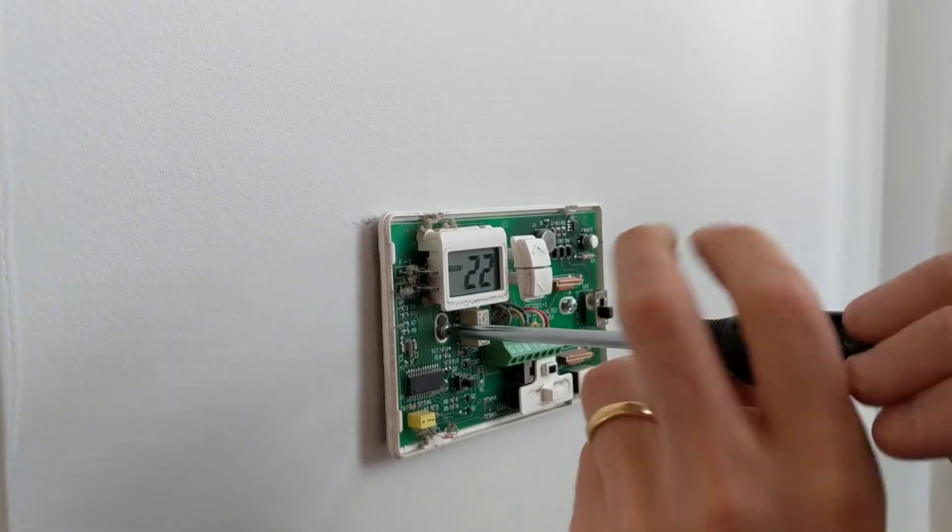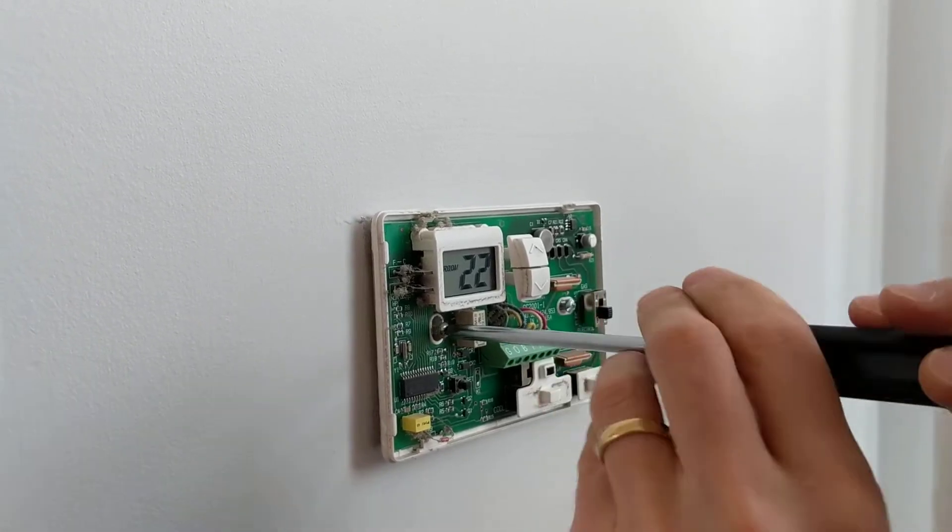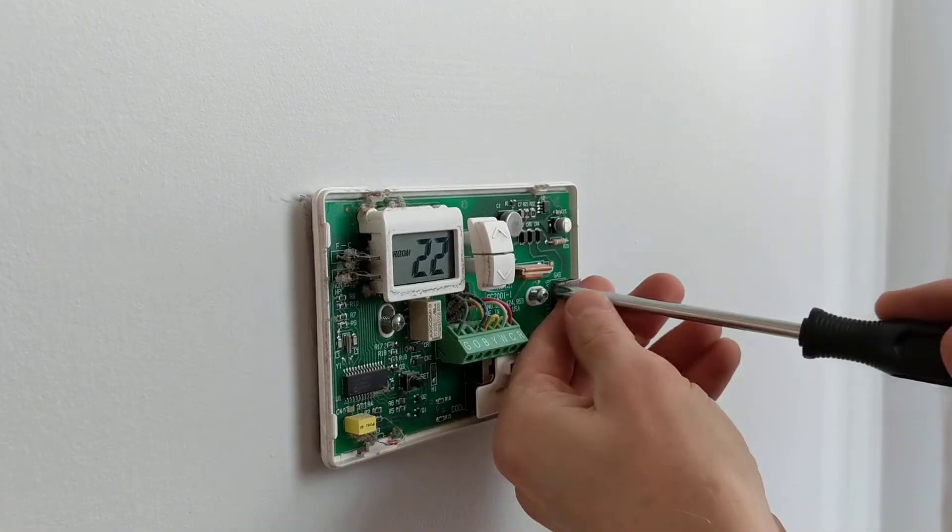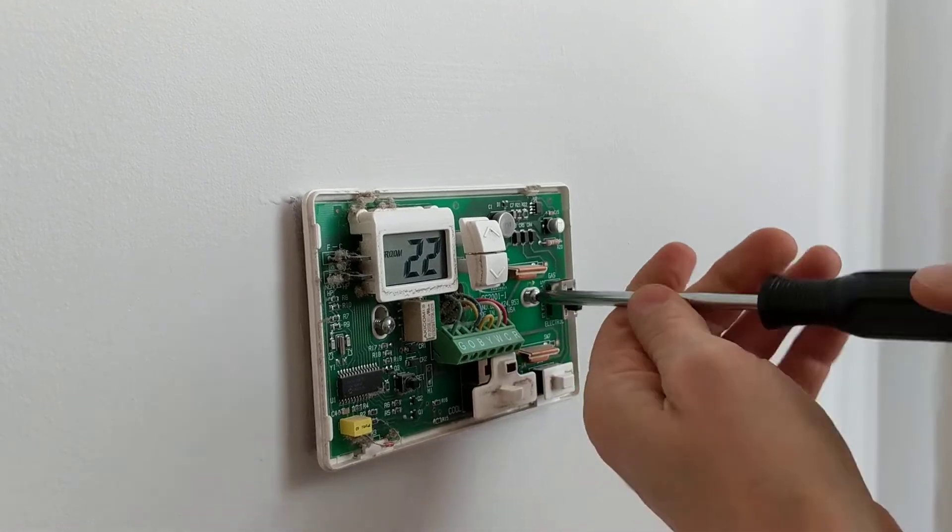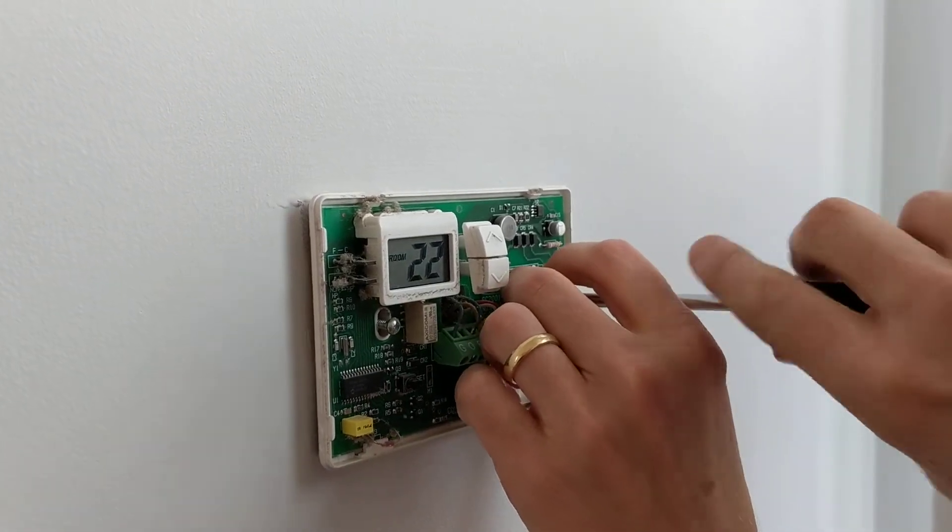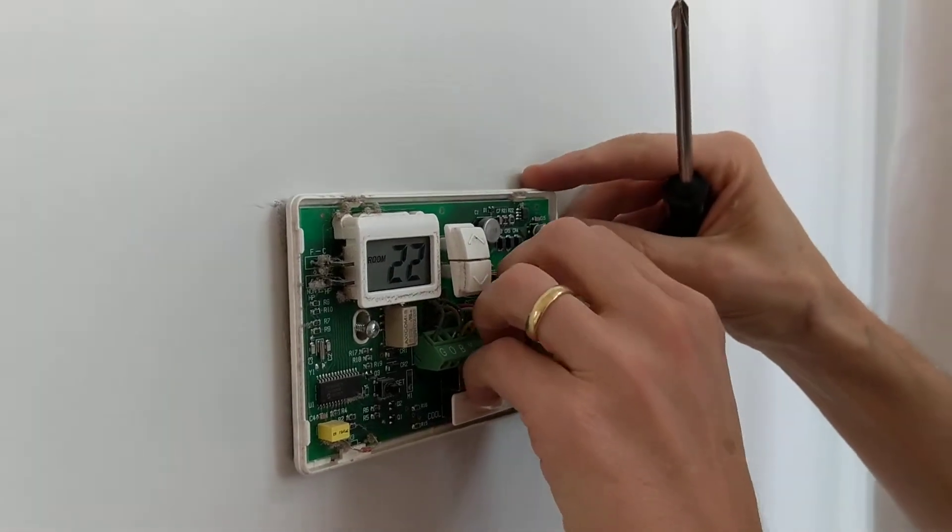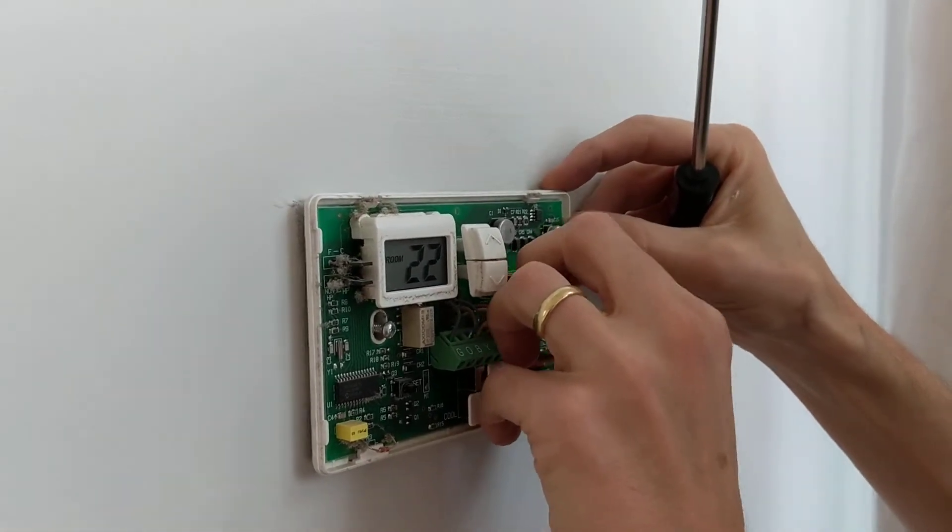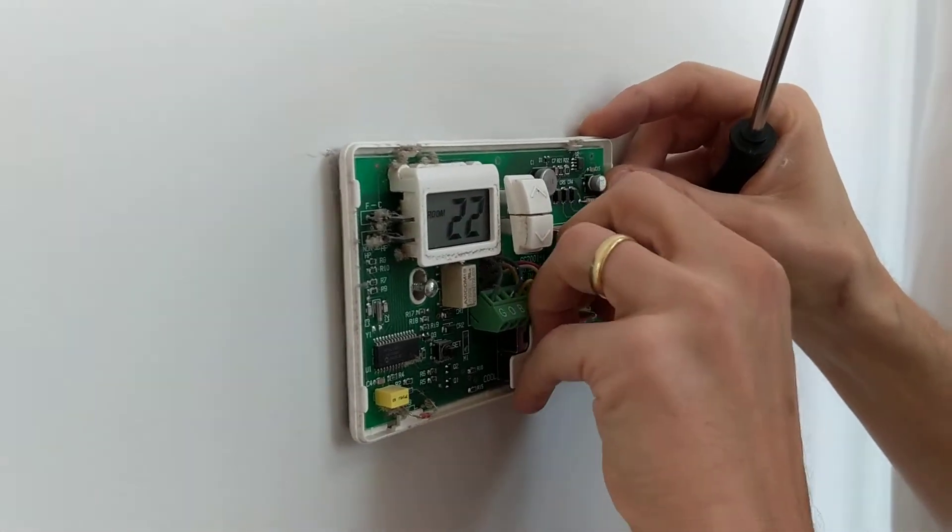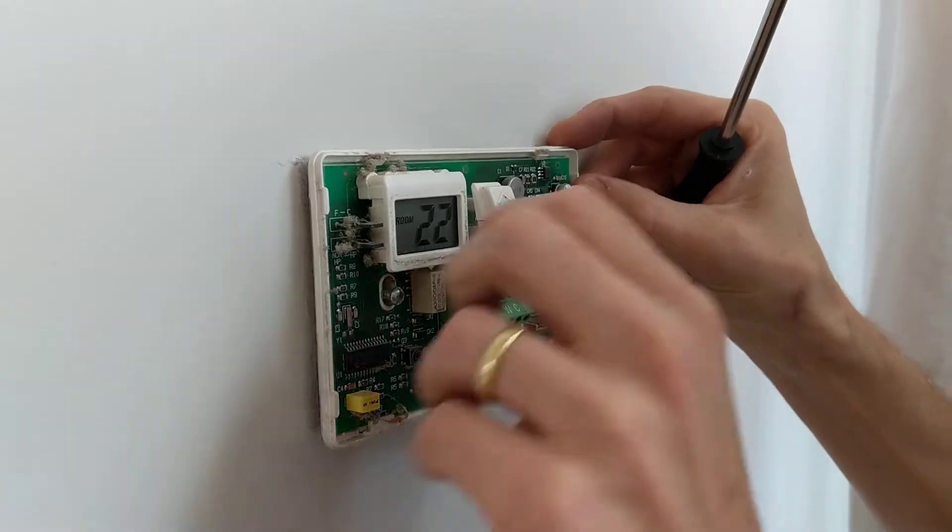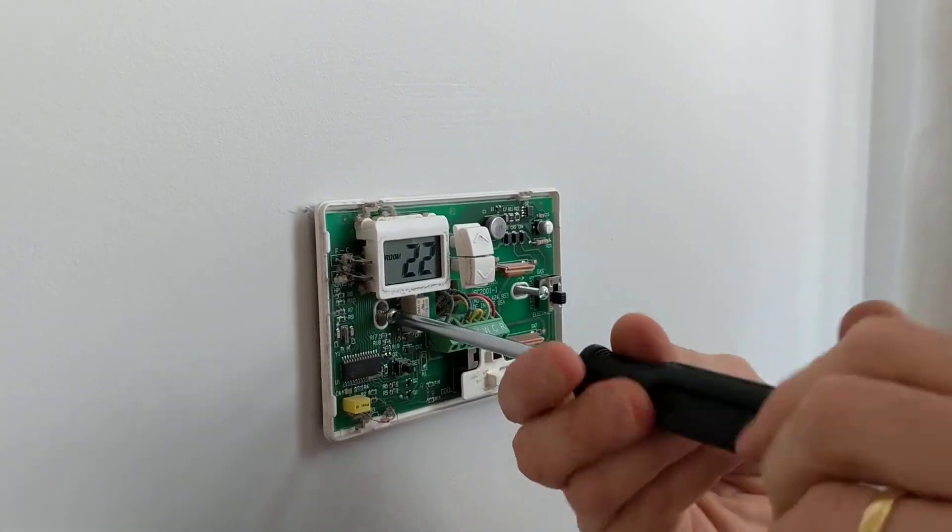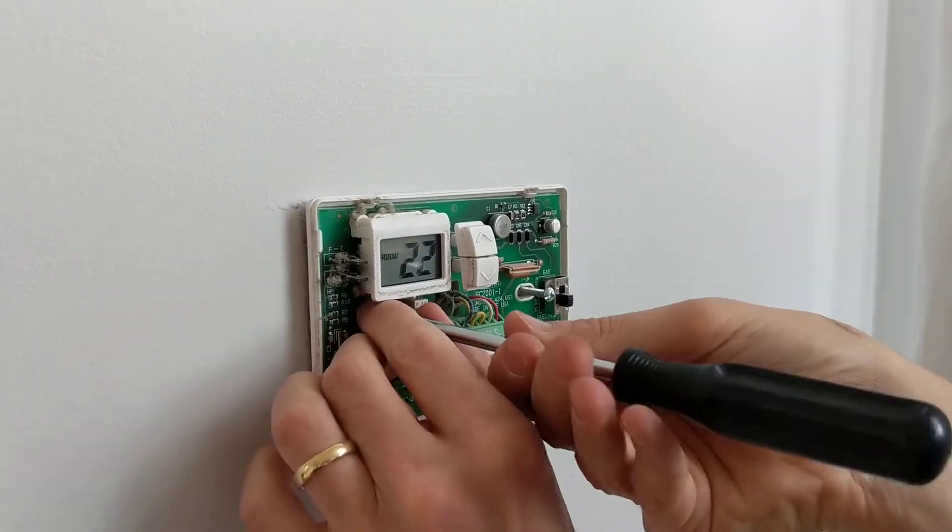So what a programmable thermostat does is essentially automatically pushes the buttons up and down for you on a schedule. There are four settings per day and seven days. So essentially you've got a morning setting 5 a.m. say or whatever you want to put it up comes on then as soon as you leave for the day say at 9 a.m. it goes to another setting and you have a third setting for when you come home and a fourth setting for going to bed.